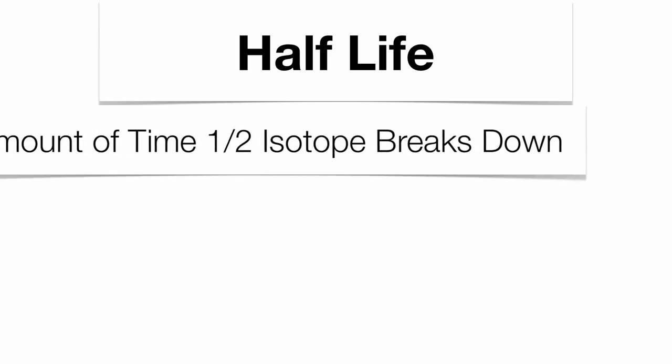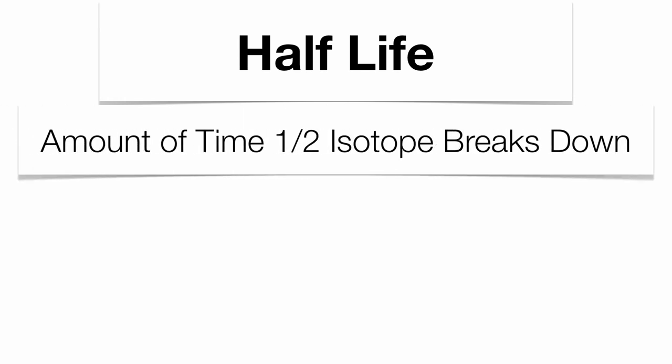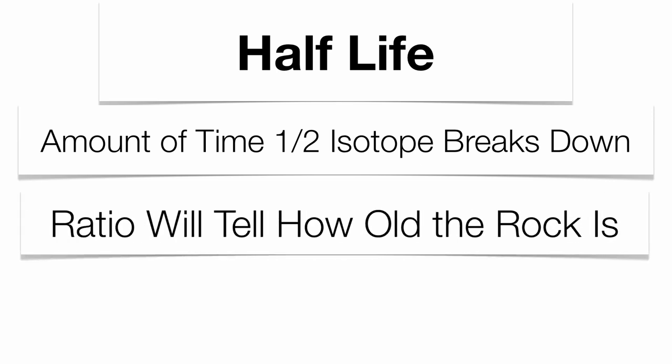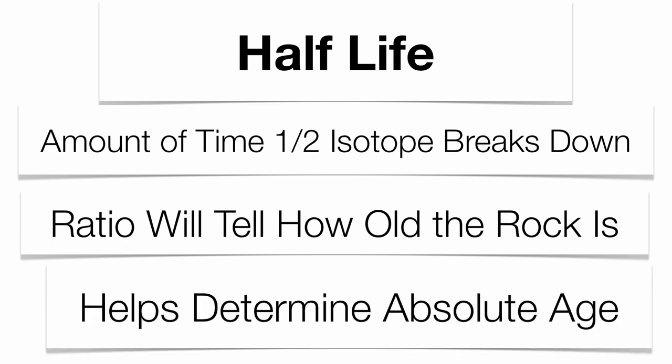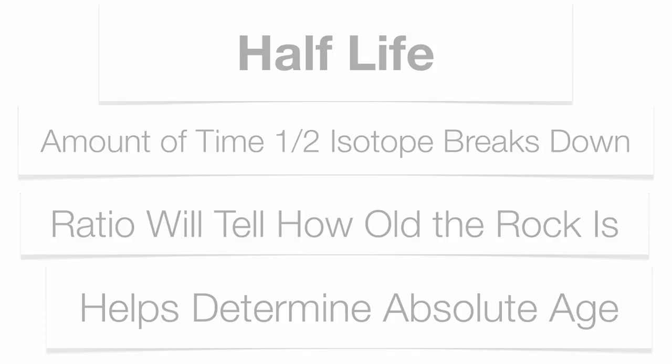What's going to be important here is what we call your half-life. The half-life itself, it's kind of self-explanatory. It's the amount of time it takes for half of the isotope to break down into the decay product or daughter product. And that ratio between the decay product and the isotope will tell you exactly how old the rock is going to be. It's going to help us determine absolute age.